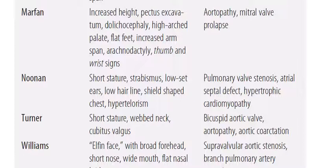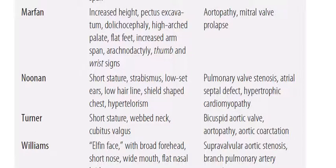Noonan syndrome: there is short stature, strabismus, low-set ears, low hairline, shield-shaped chest, and hypertelorism. Cardiovascular features include pulmonary valve stenosis, atrial septal defect, and hypertrophic cardiomyopathy. Turner syndrome: short stature, webbed neck, and cubitus valgus. Cardiovascular manifestations include bicuspid aortic valve, aortopathy, and aortic coarctation.